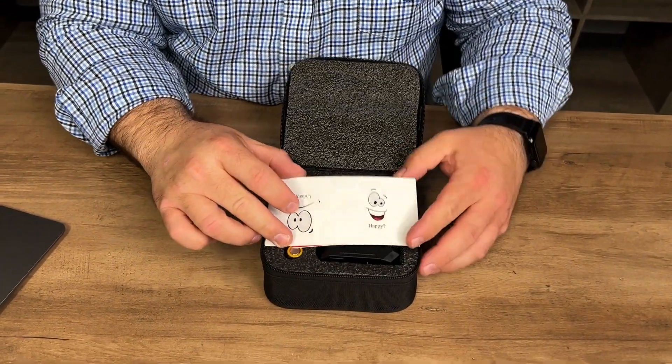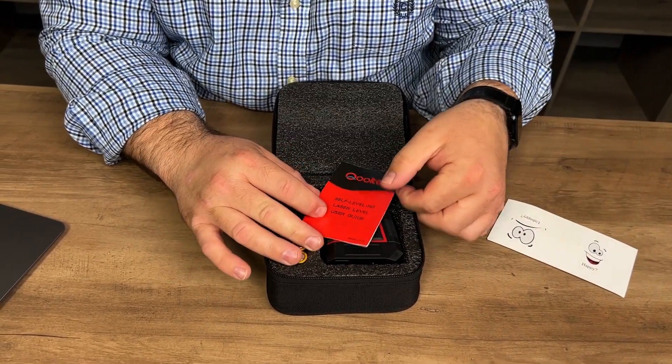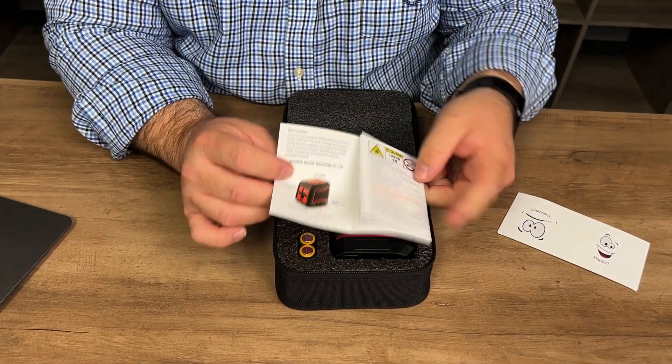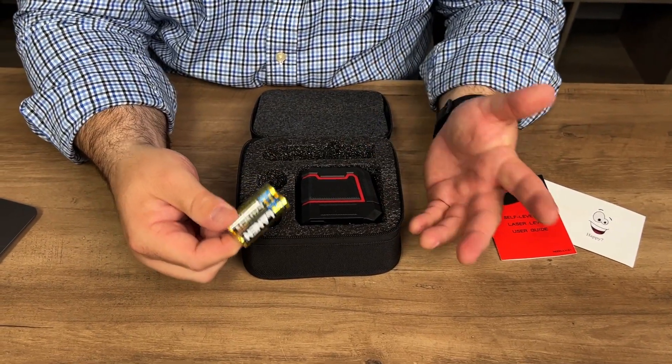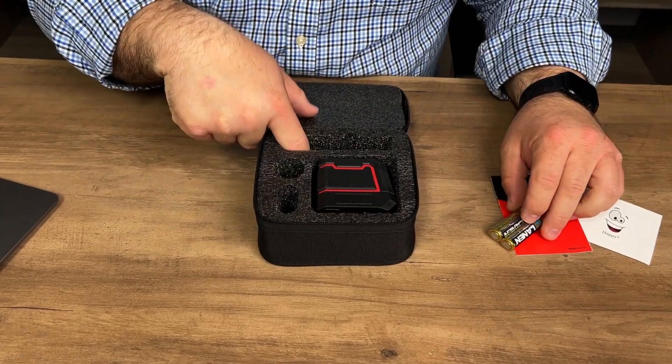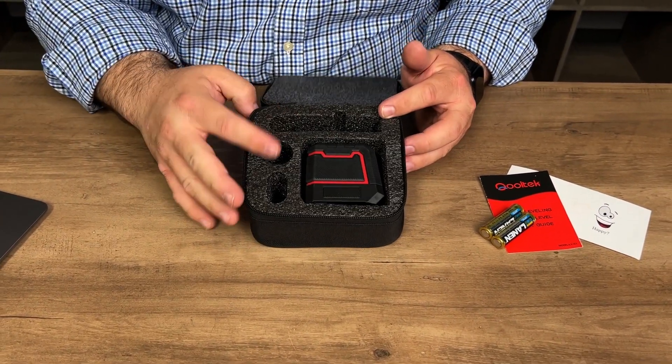Whenever you open it up, you will see a little card here that gives you some contact information for the company. You'll have a user guide as well. This actually does come with two AA batteries for this, which I think is very nice. There are a couple more slots here that don't have anything in them, which is kind of interesting.